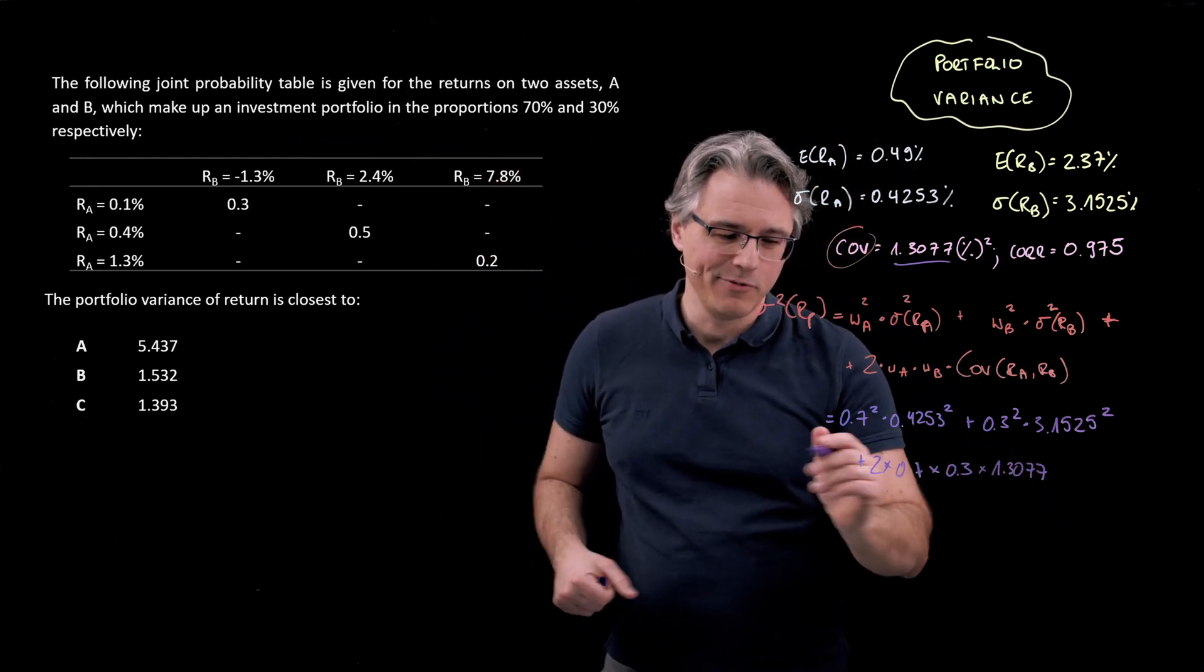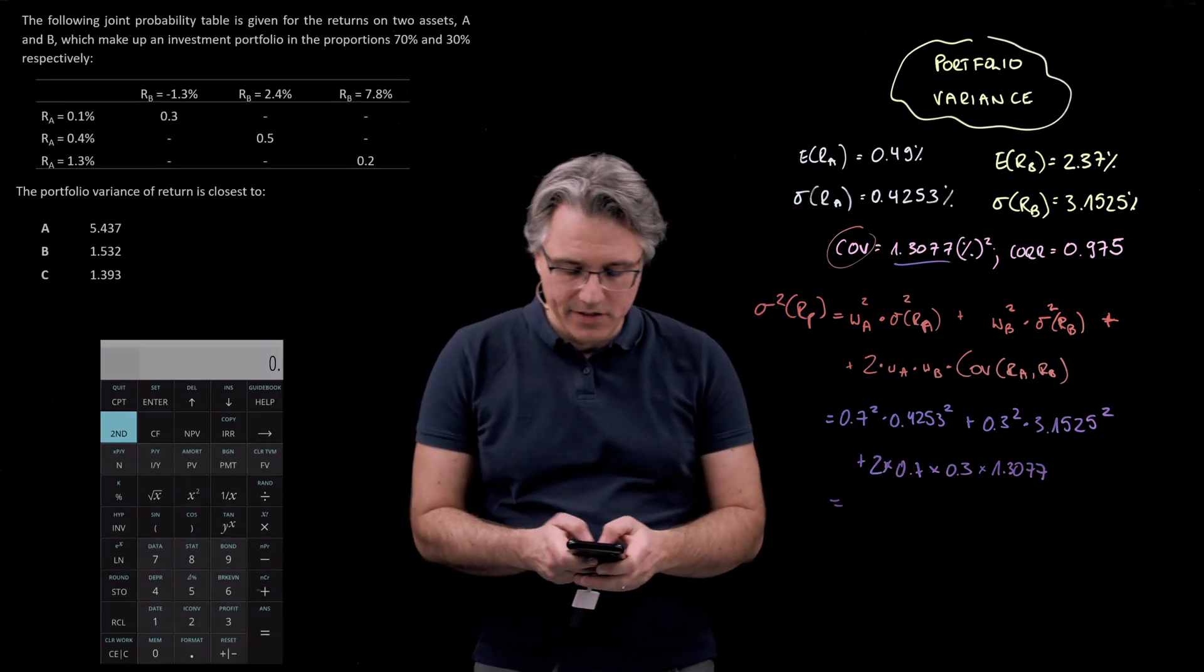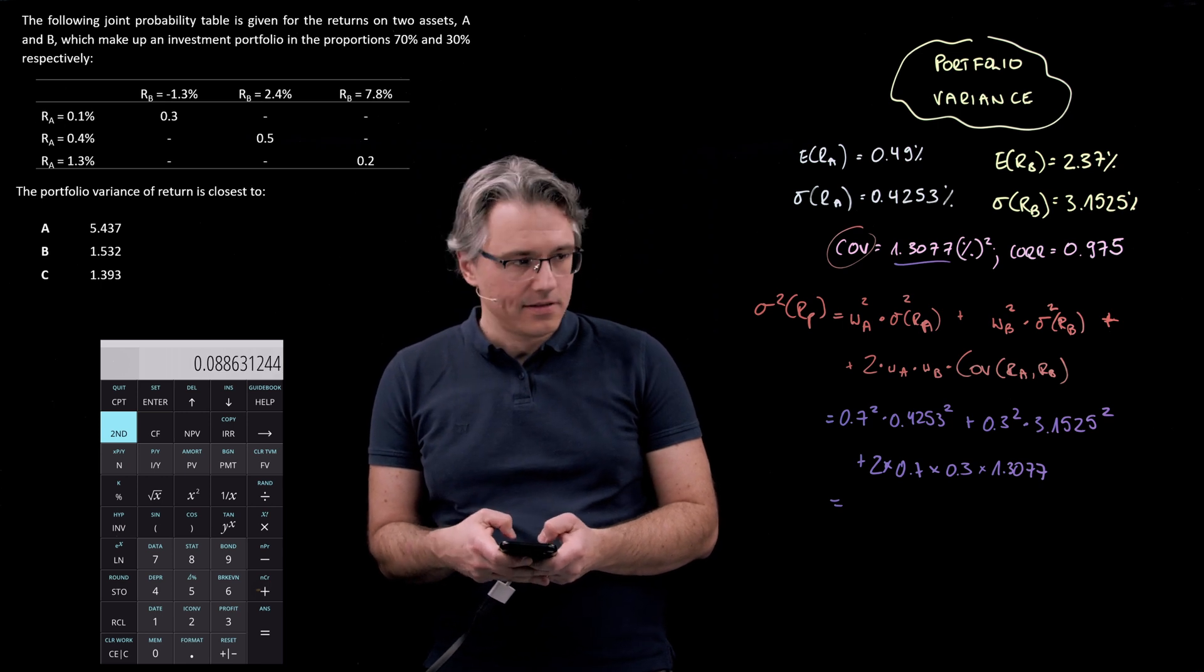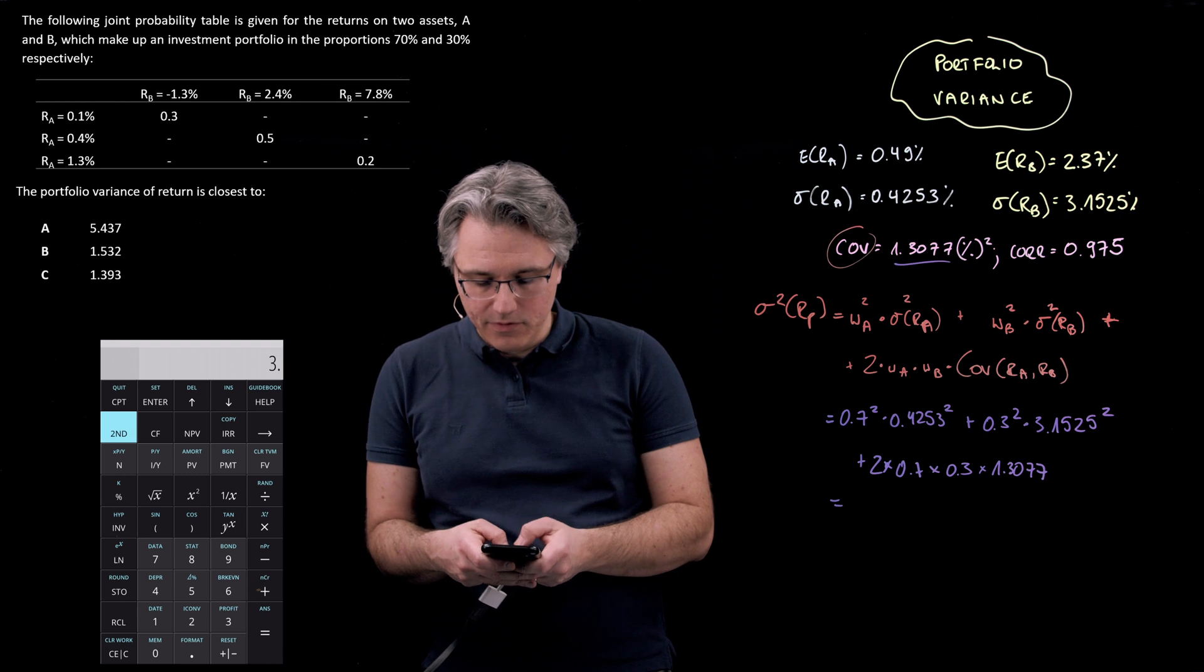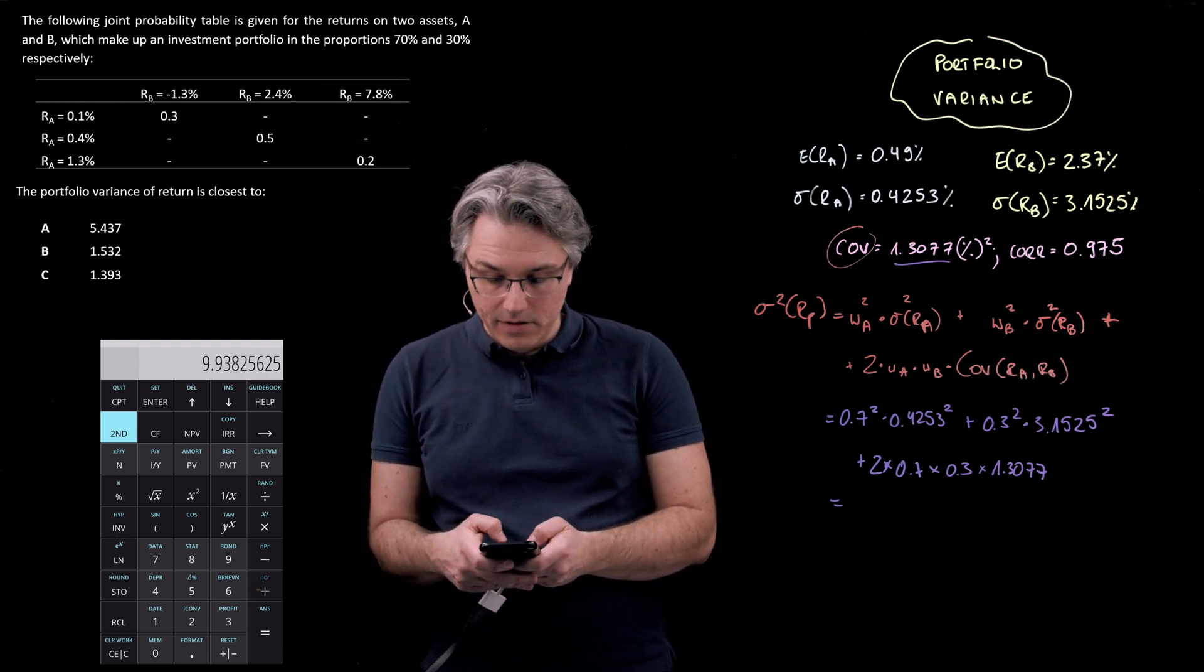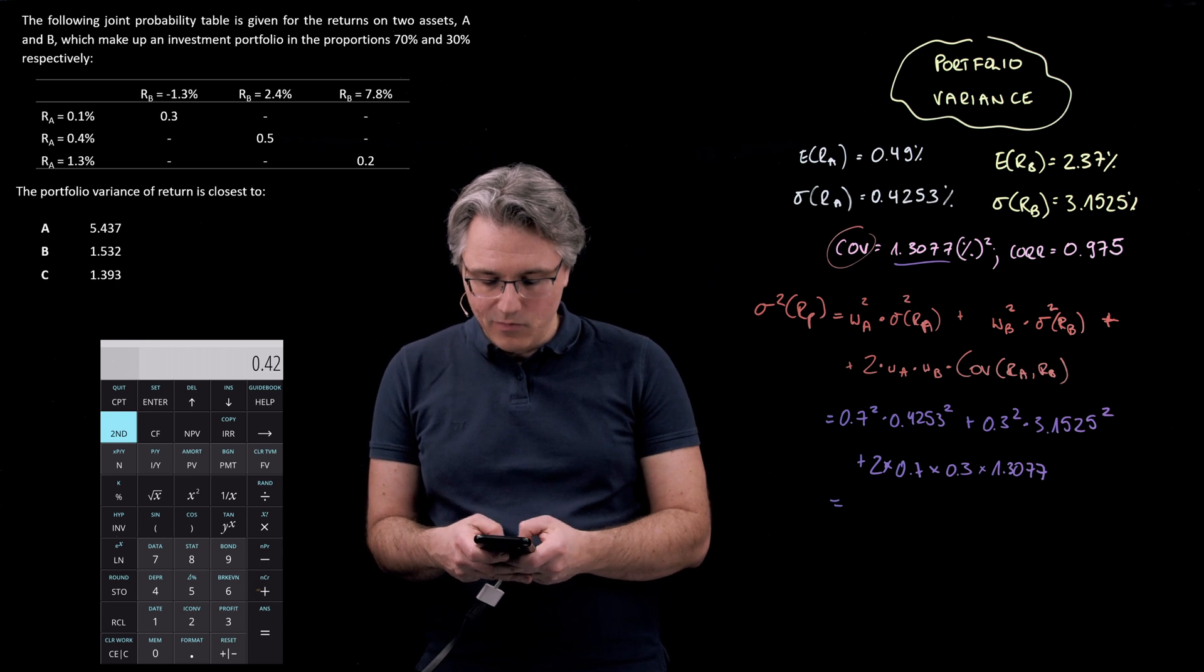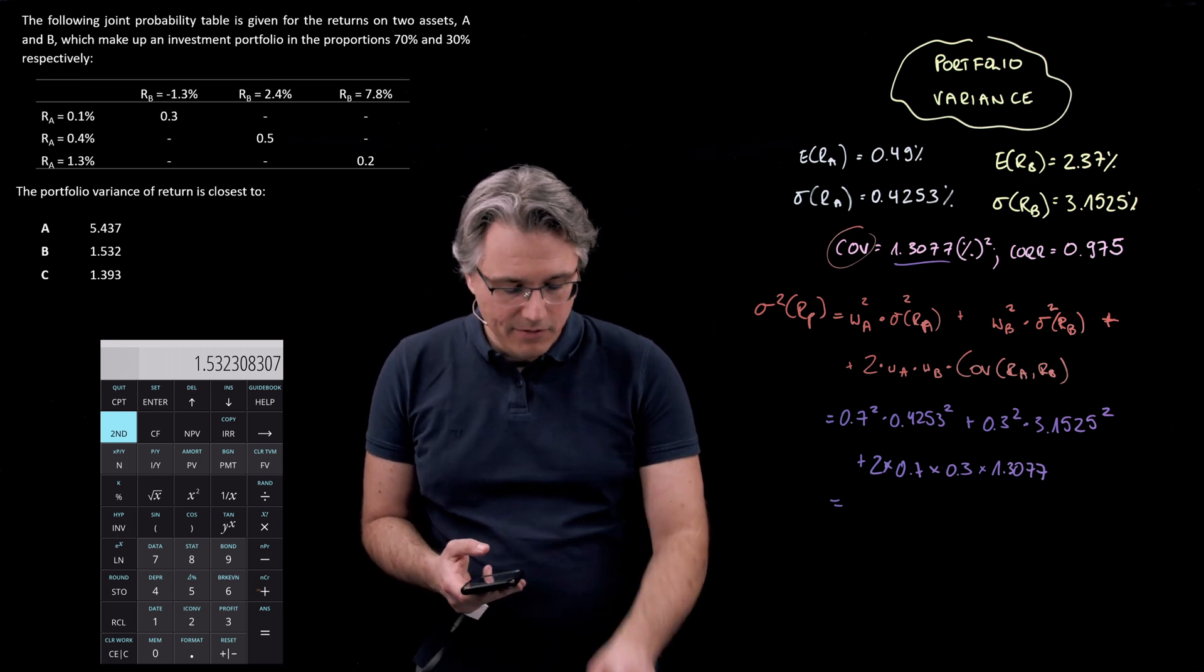This should be fine. Let's check what comes out. Over to the calculator now. 0.7 squared times 0.4253 squared plus 0.3 squared times 3.1525 squared plus 2 times 0.7 times 0.3 times 1.3077.